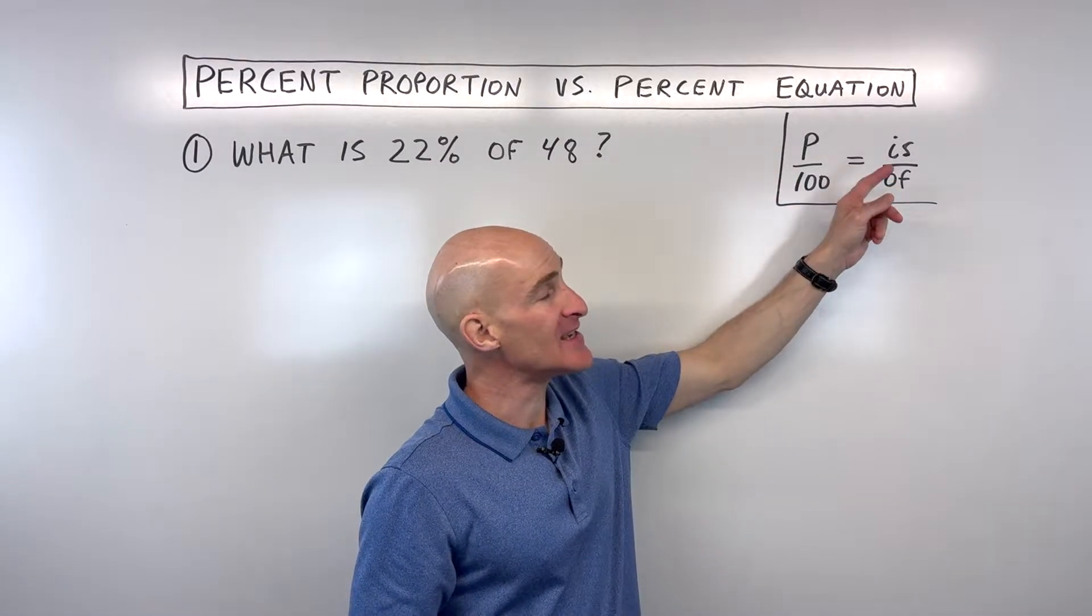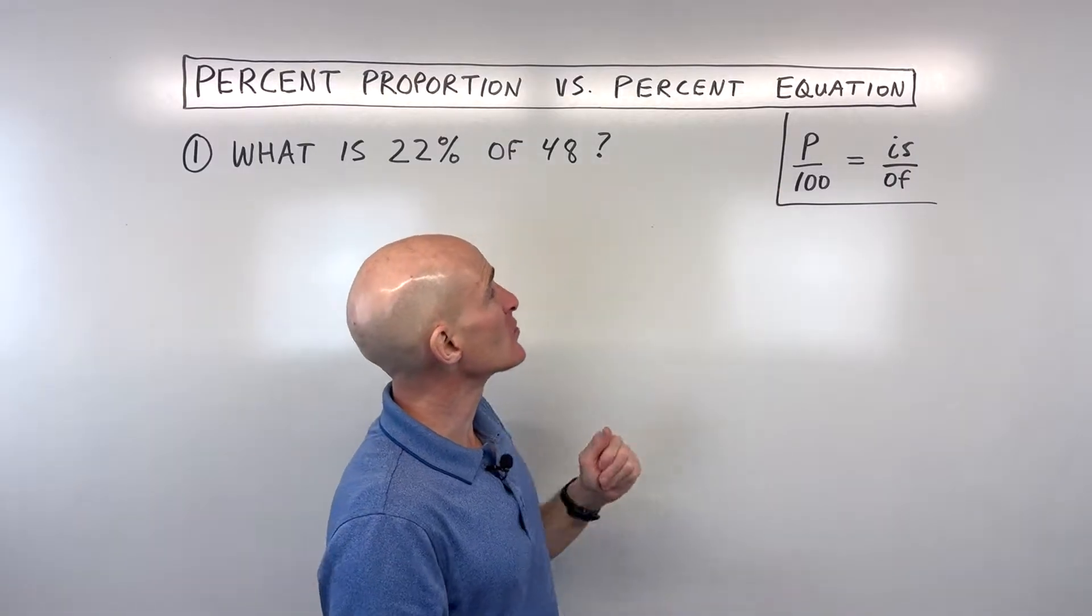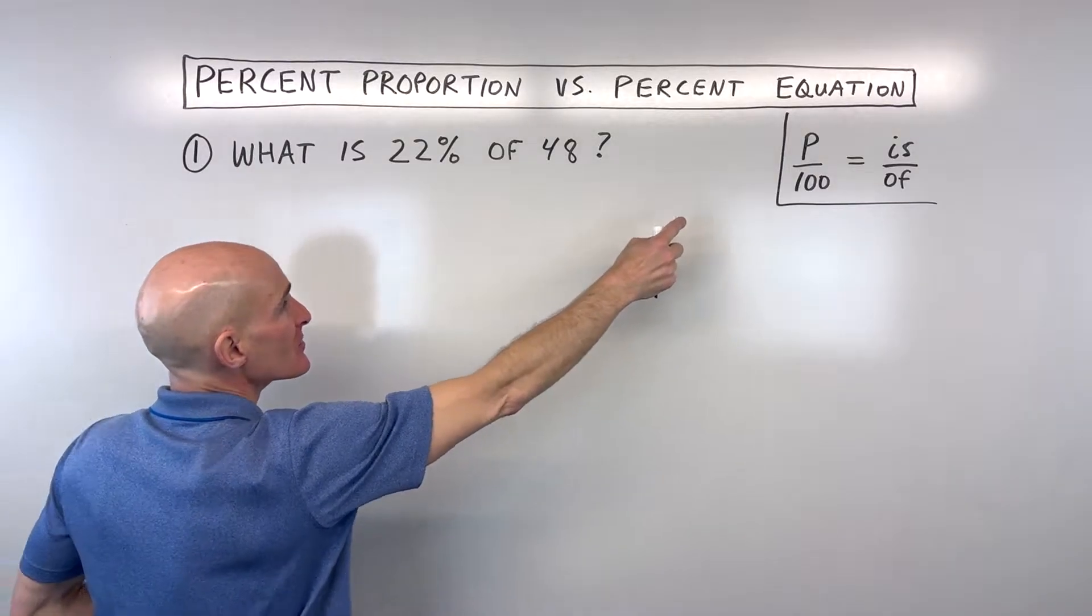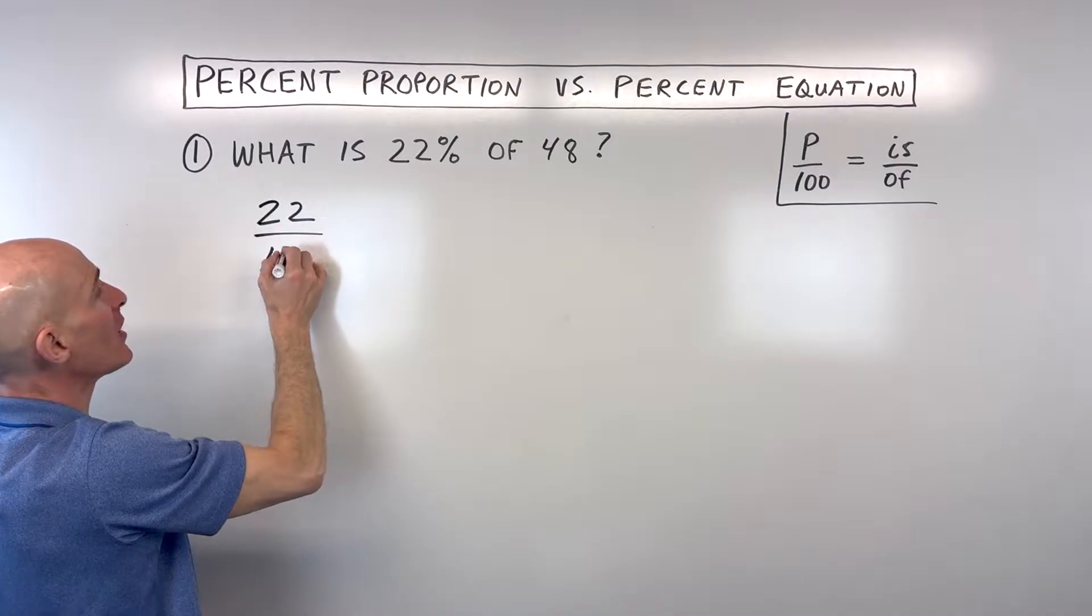When you see 'is', that's the part. And 'of' means out of, like the whole. So that's what we're doing, setting up a proportion. It says what is 22%? That's our percent right here, 22 parts out of 100.